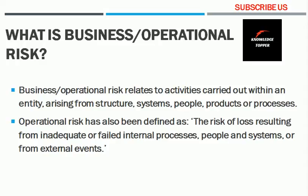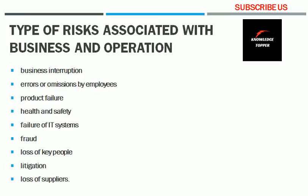Though there are many types of operational risk, the most important ones are: business interruptions, errors or omissions by employees, product failures, health and safety failures, failure of IT systems, fraud, loss of key people, litigation of any kind, and loss of suppliers. If you concentrate on these types of risk associated with business and operations, you may find internal and external processes or events of an organization.